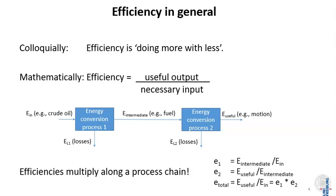You can see it from the calculation: when you have a first process with 90% efficiency and another process right after it with another 90%, the overall efficiency of these two processes combined will be 90 times 90%, which is 81%. And if you remember the service cascade just shown, there are many different efficiencies that are multiplied together — so this is quite an important observation.